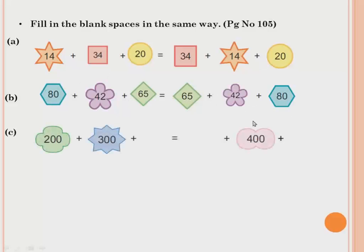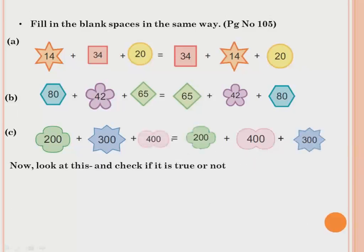Next: 200 plus 300 plus dash equals dash plus 400 plus dash. On the left hand side, 200 and 300 are there. The number not yet on the left side is 400, so that fills the blank. On the right hand side, 400 is already placed, so the missing numbers are 200 and 300 — you can write them in any order.